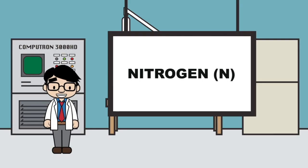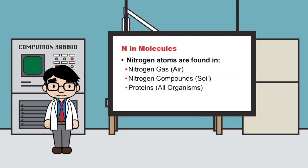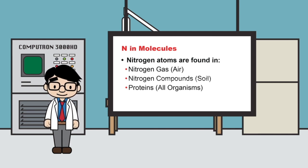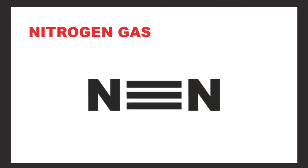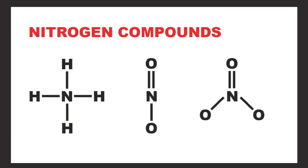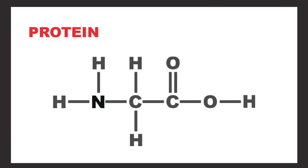Now let's move on to nitrogen. Nitrogen atoms are found in the air as nitrogen gas, in nitrogen compounds in the soil, and in proteins which are found in all organisms. Here is nitrogen gas, here are the nitrogen atoms, here are nitrogen compounds and the nitrogen atoms in those compounds, and here is a protein and the nitrogen in that protein.